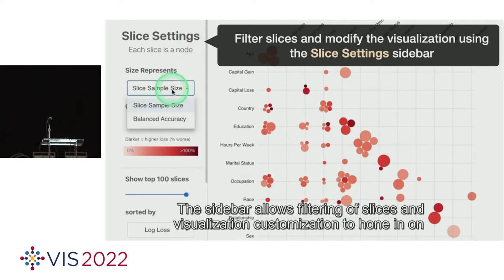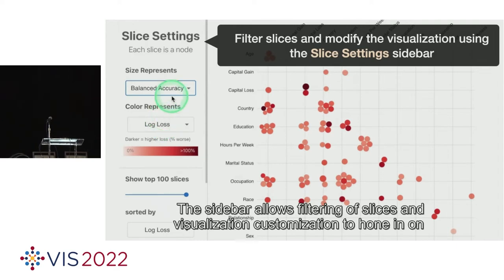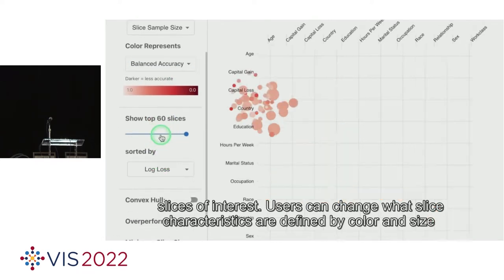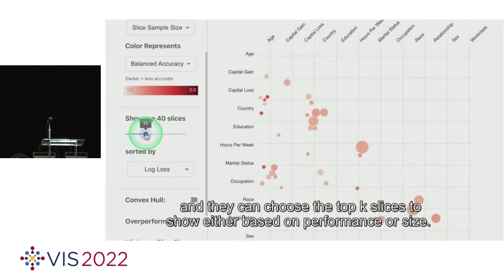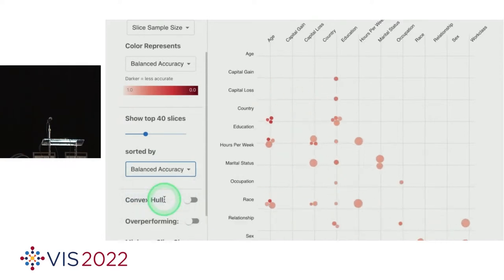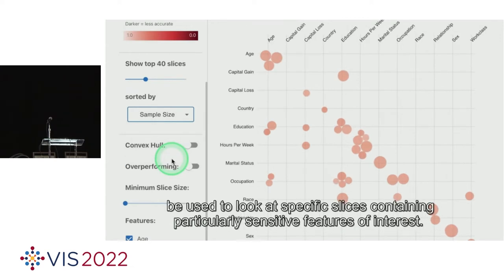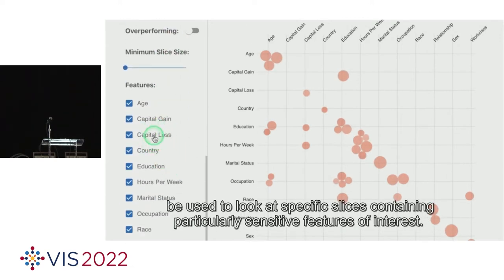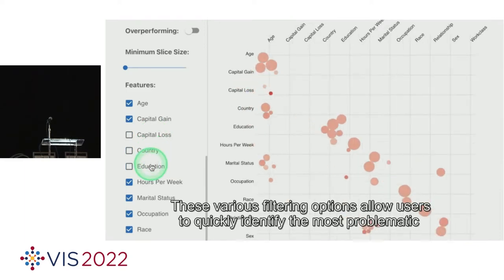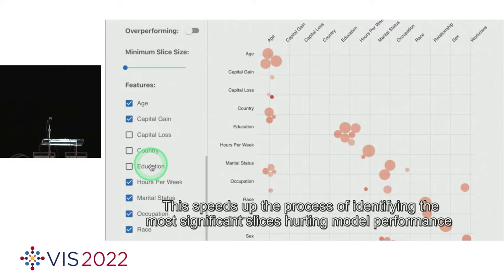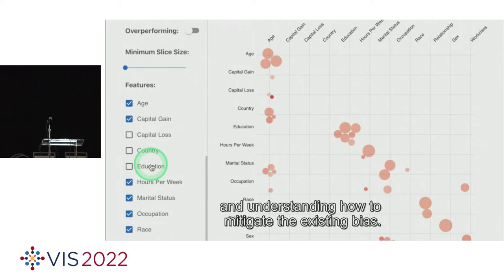The sidebar allows filtering of slices and visualization customization to hone in on slices of interest. Users can change what slice characteristics are defined by color and size, and they can choose the top case slices to show either based on performance or size. A minimum slice size can be set to filter out outliers, and the feature checkboxes can be used to look at specific slices containing particularly sensitive features of interest. These filtering options allow users to quickly identify the most problematic slices within their data.